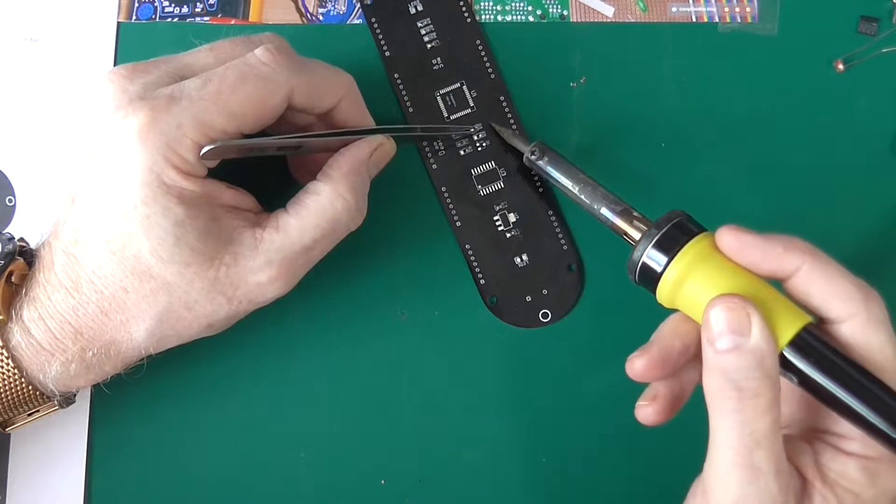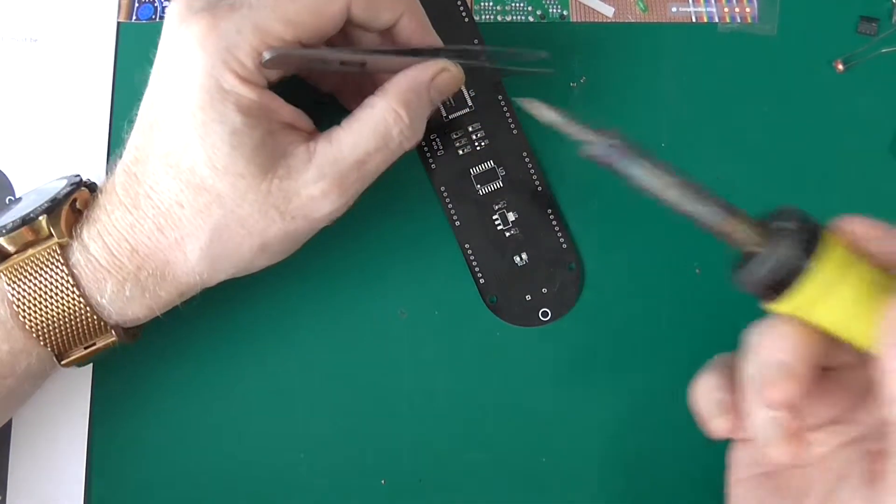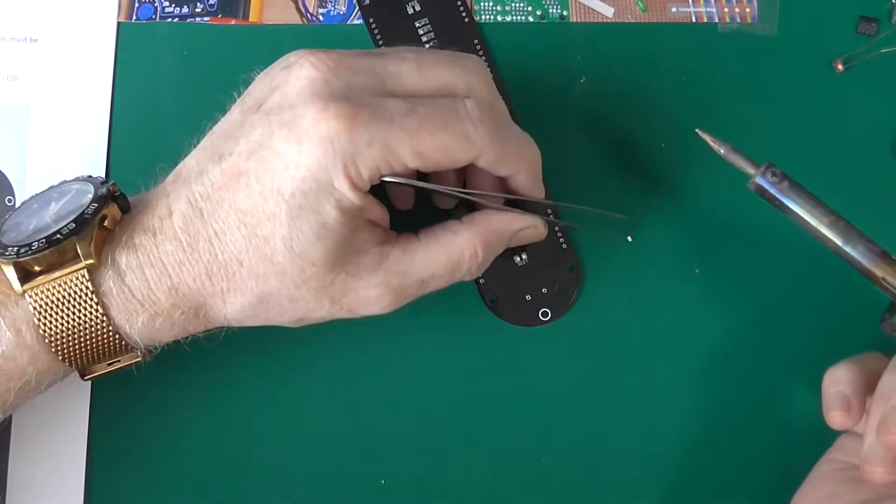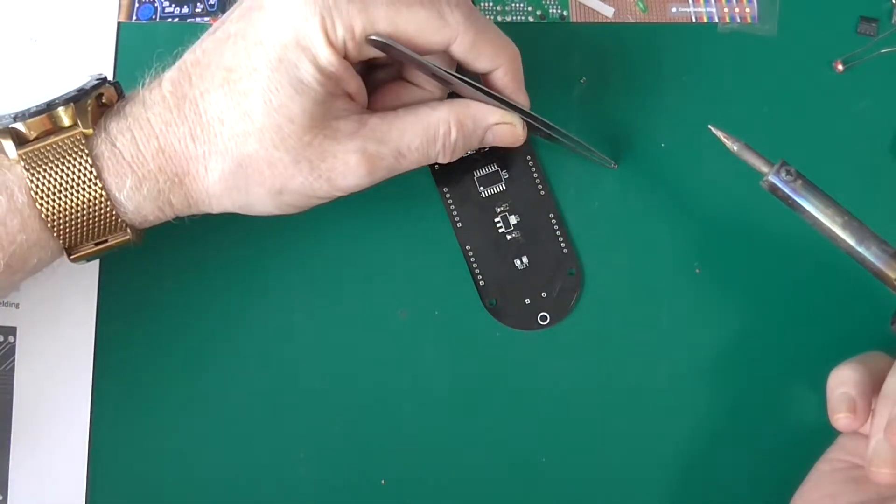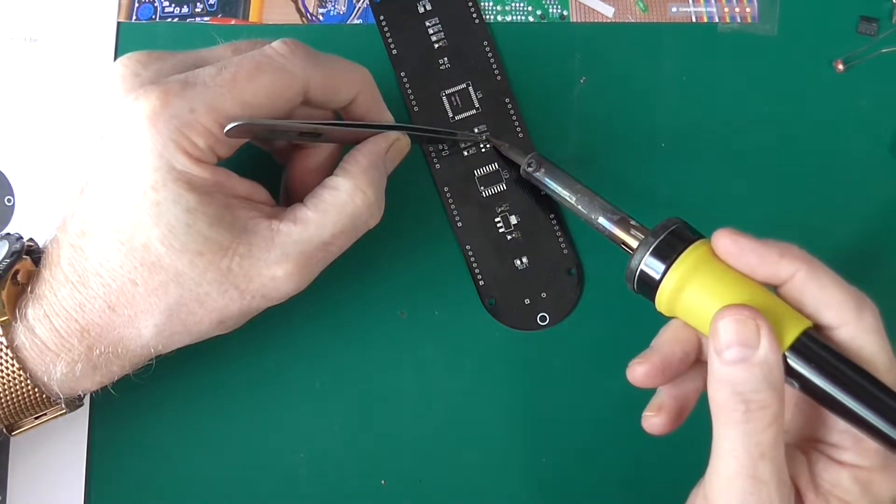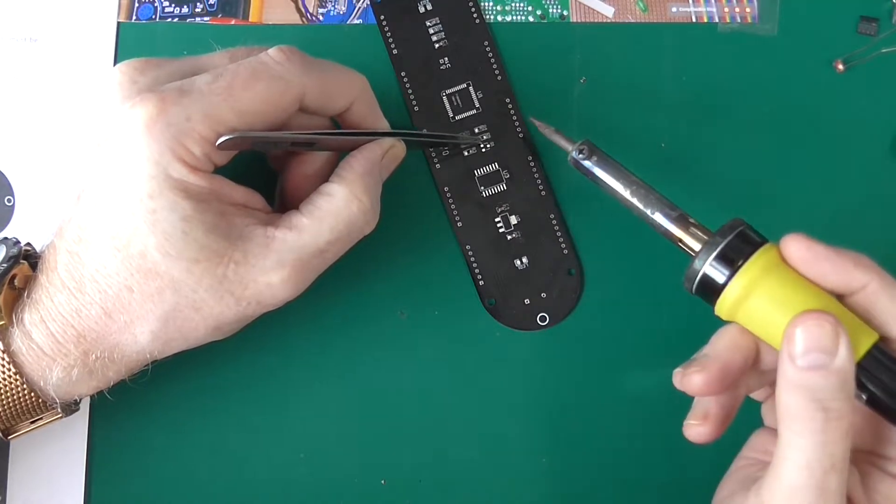These things are hard enough to solder. I make no apologies, this is a cheap iron. I need a much better one but they're so expensive now. Wish I still had my old temperature controlled Weller. A choice of bits and I could solder anything with that.